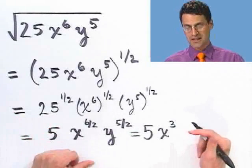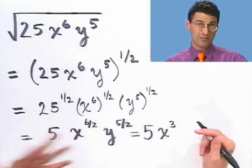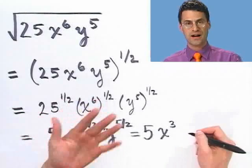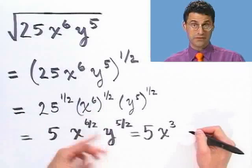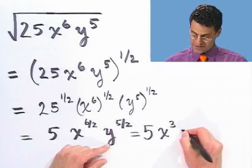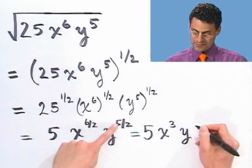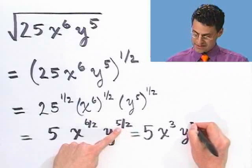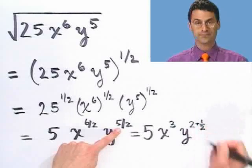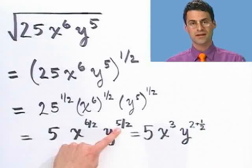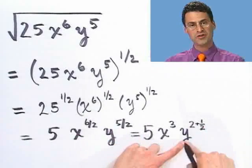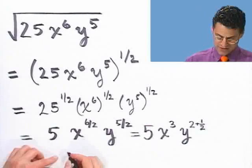For y to the five halves — I'd personally be happy leaving it that way. But if you want another form, I'll rewrite five halves as two and a half, and using laws of exponents, adding exponents corresponds to multiplying the bases.